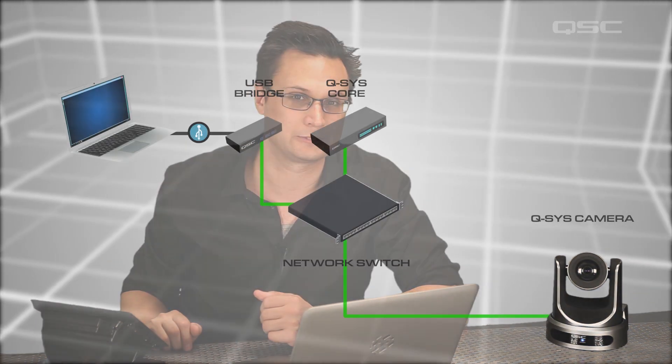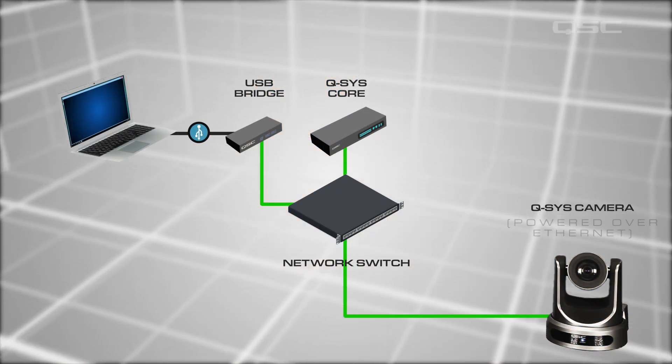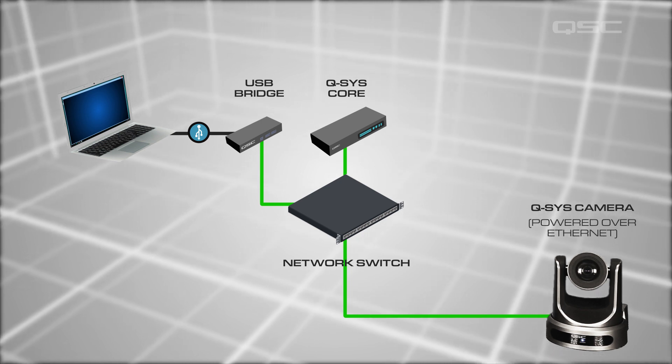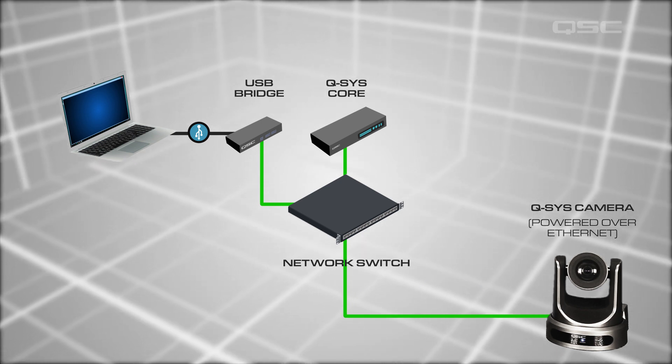Meet the Q-SYS camera — the PTZ2060. The camera is a Q-SYS peripheral, which means that all of its control is built into the designer software. You can take all of those control buttons and put them on the same touch screen device that you're already using to manage all the audio in the room. Plus, it's a POE device, meaning it's powered by a single Cat5 cable.